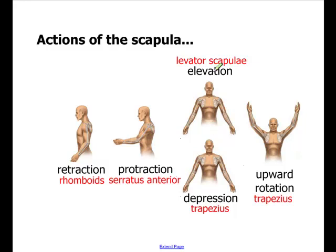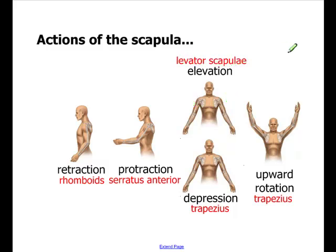We also have two opposing actions. Elevation is simply shrugging or elevating your shoulders, and that action results from contraction of the levator scapula. The opposite action is shoulder depression — pushing your shoulders down towards your feet — and the muscle responsible for that is the large trapezius.